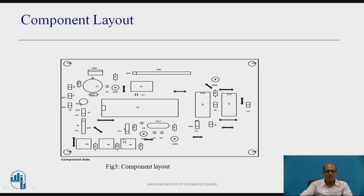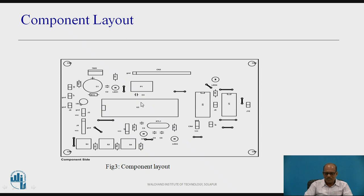This figure shows a component layout. While drilling the PCB, looking at the component layout, you can see a 40-pin IC — all holes for the pins of this IC are drilled with a 0.7 mm drill bit. For connectors, drill holes with a diameter of 1 mm. For regulator IC, 1 mm. For the preset, 1.2 mm. For switches, 1.4 mm. In this way, depending on the component, hole sizes are different, and holes are drilled as per the requirement from the component layout.